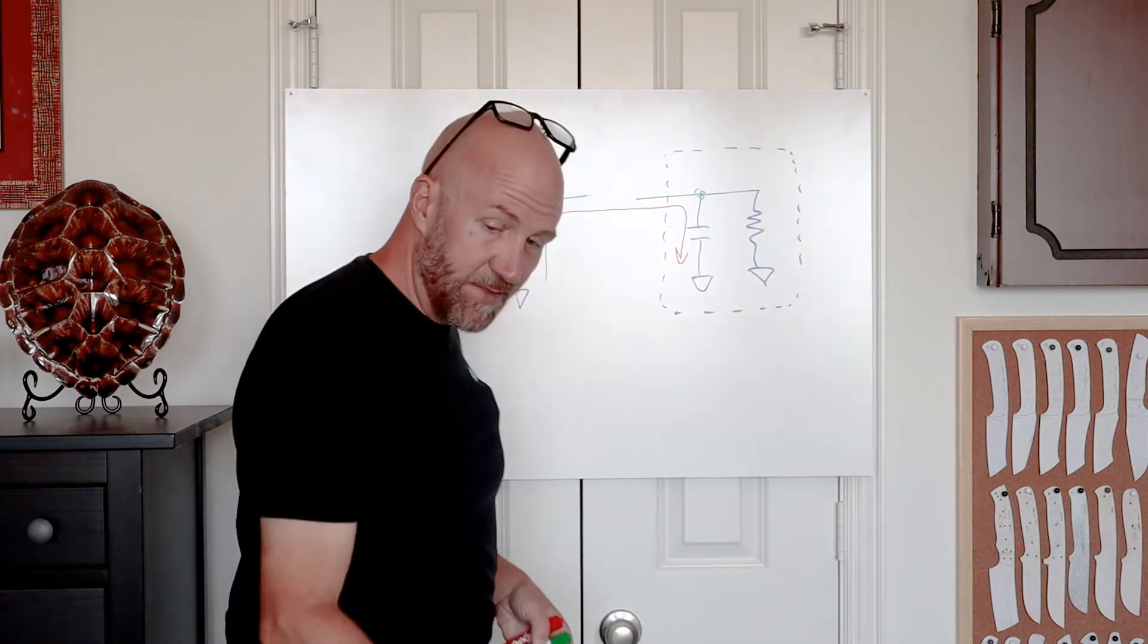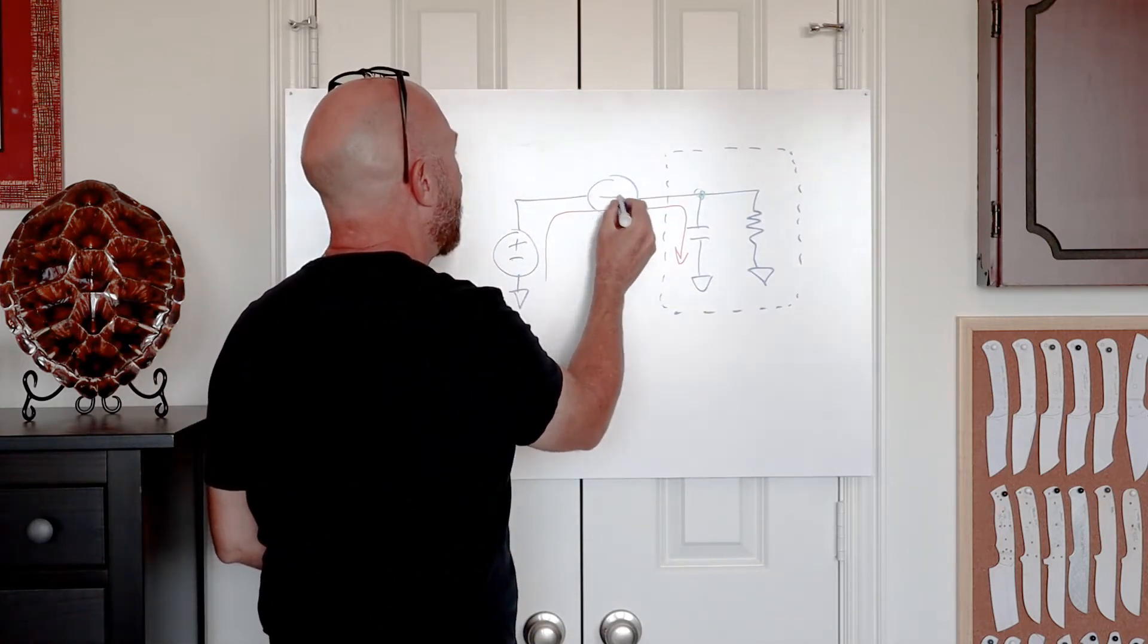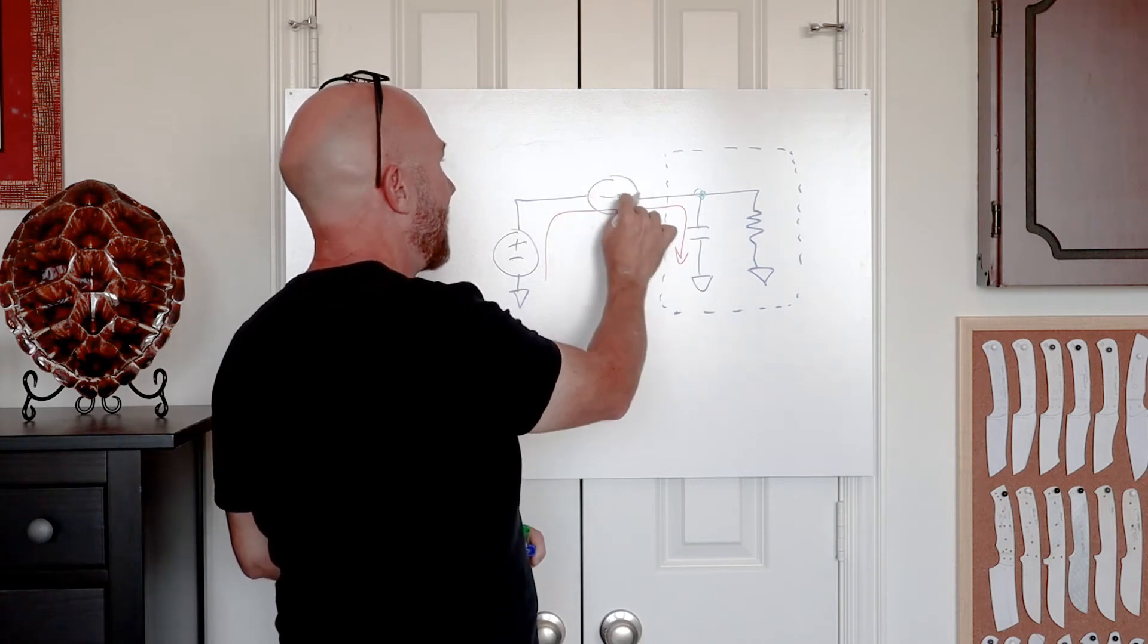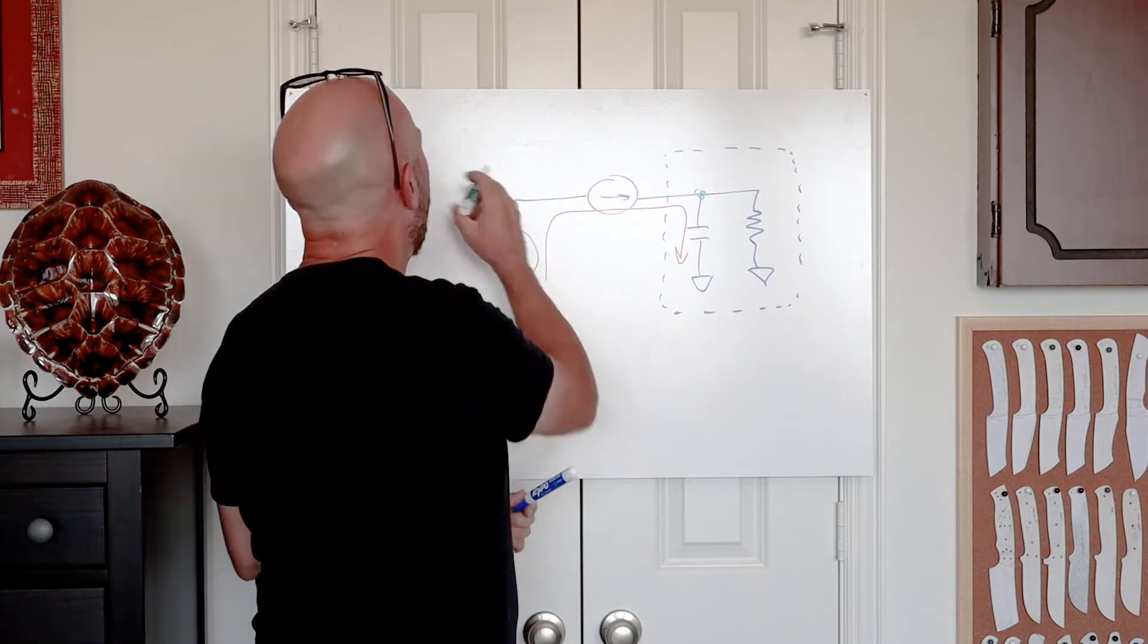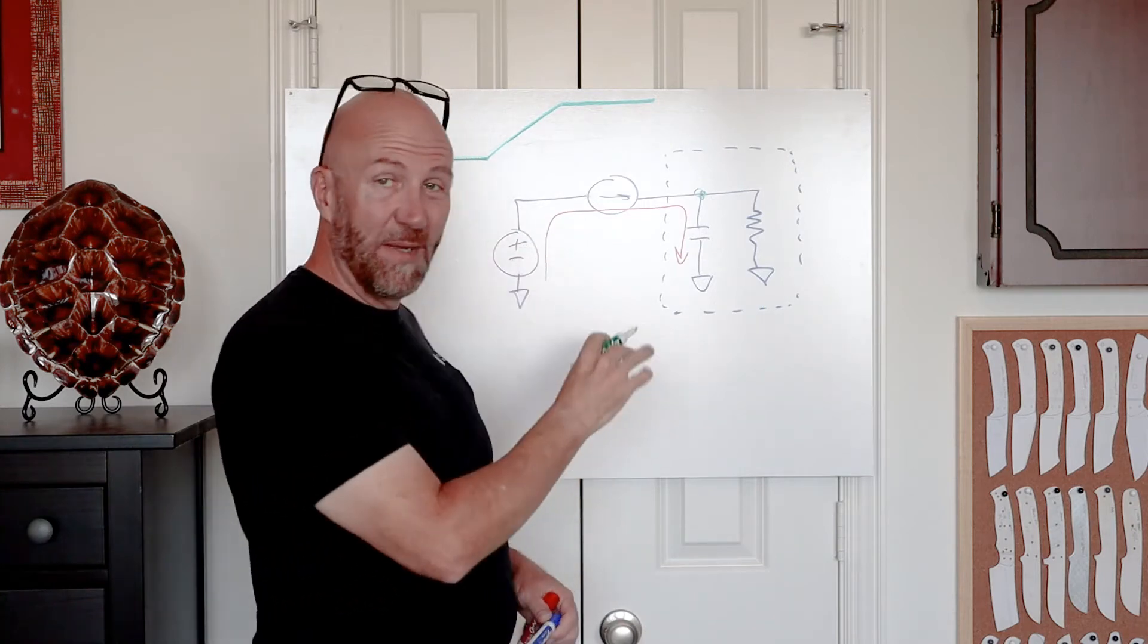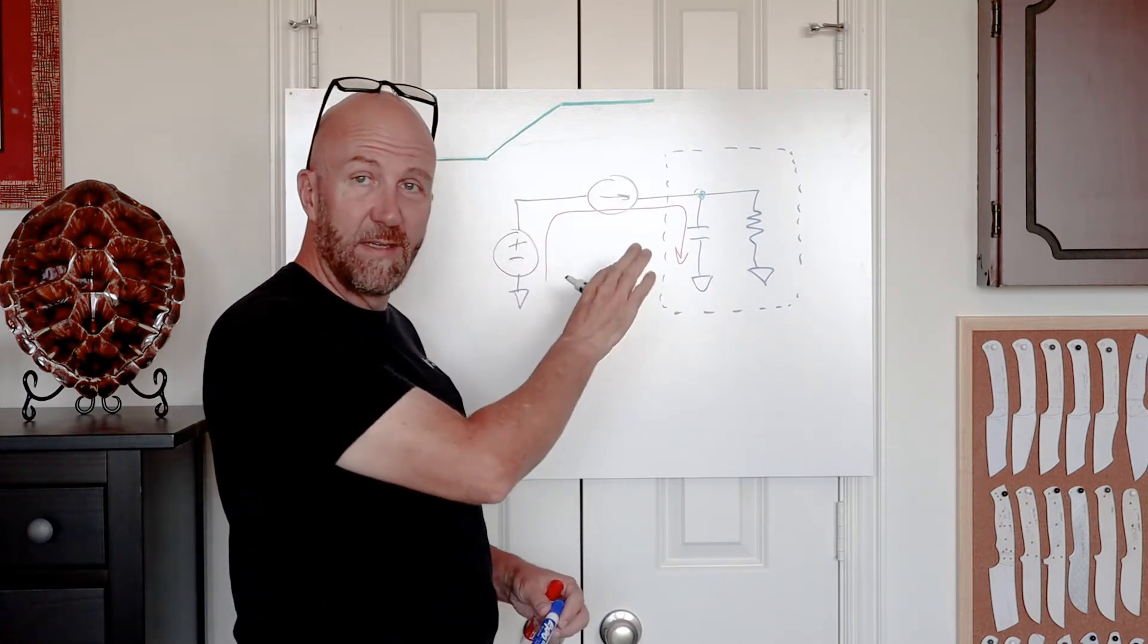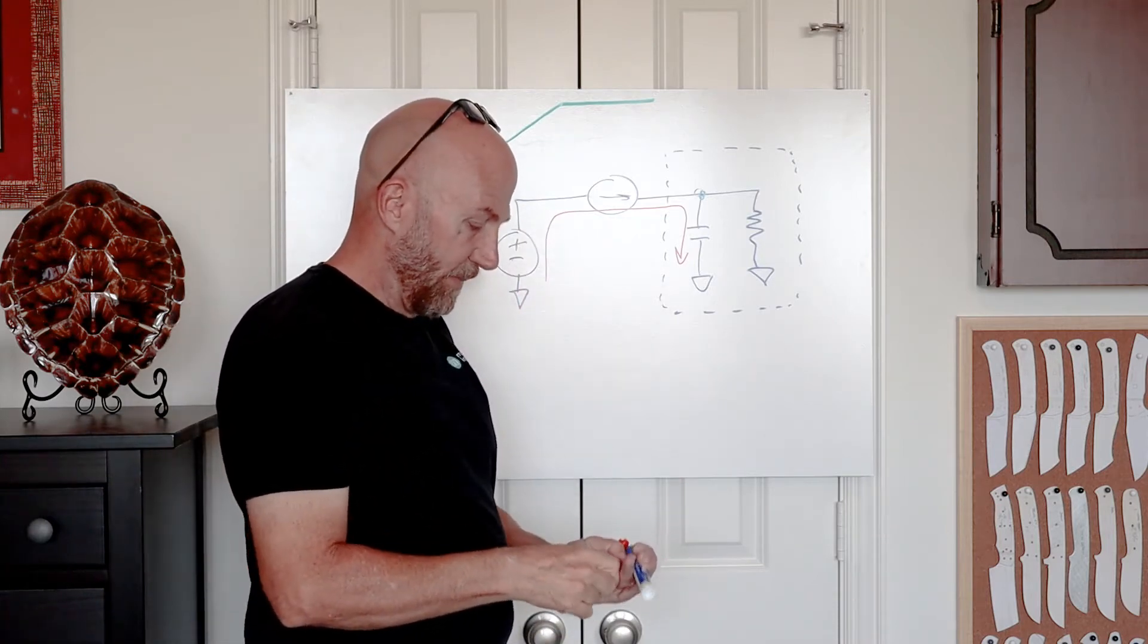So how do we solve this? The first thing we want to do is replace this switch with something else. Ideally something like a current source, because if we have a current source then we know how much current is being drawn. It can be controlled, and with a constant current source the output voltage on the load will ramp up smoothly. You'll get a nice controlled rise to its final level with none of this ringing.